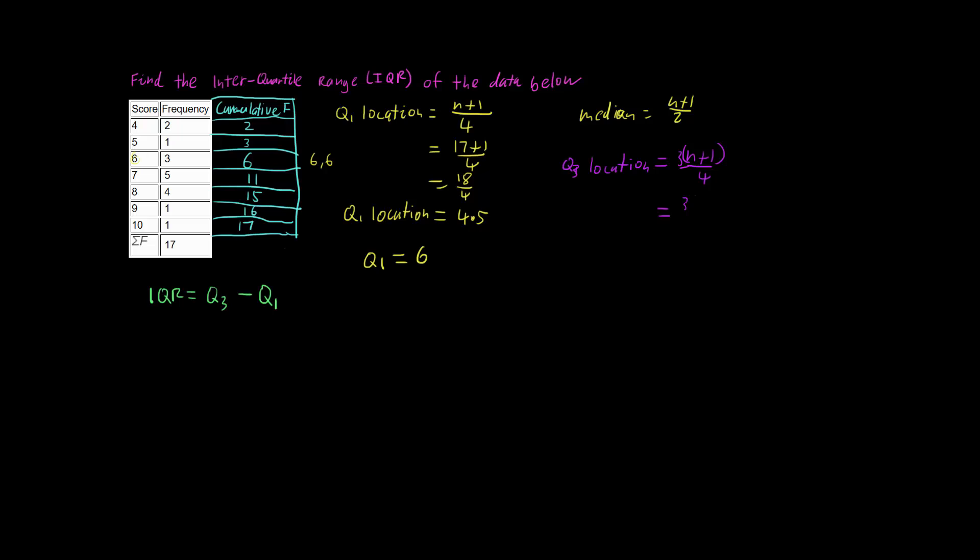So we're going to have 3 times 18 over 4, because the n plus 1 is still 17 plus 1, which is 18. And this is going to give us 13.5.